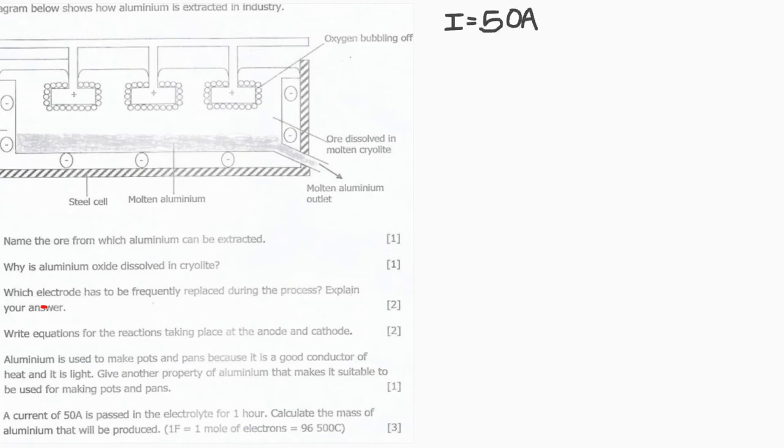The time is one hour, which is 3600 seconds. Back to the half equation: aluminum ion requires three moles of electrons to form one mole of aluminum. Again, one mole of aluminum ion requires three electrons to produce one mole of aluminum. Get that in your head because it is going to help us answer the question.